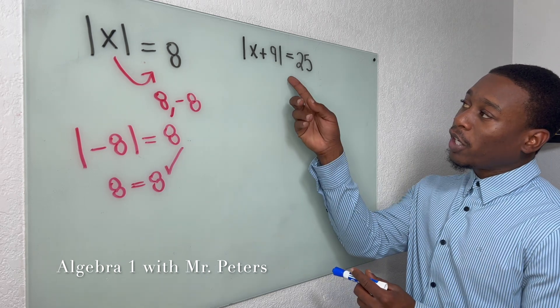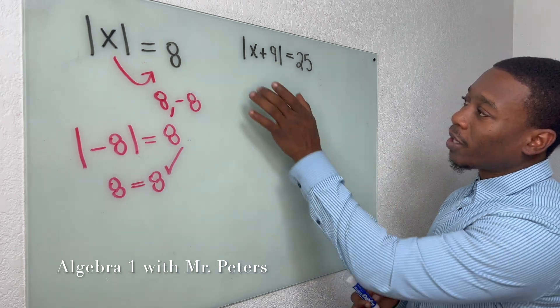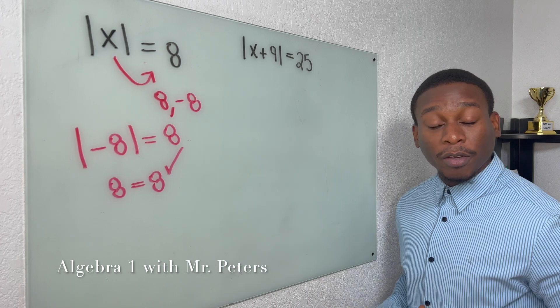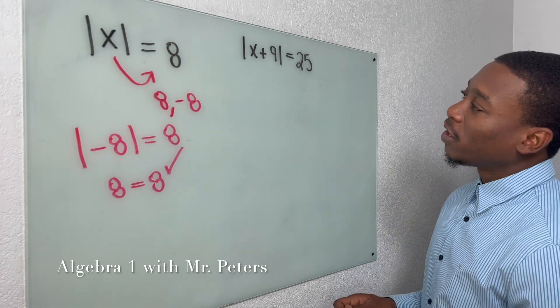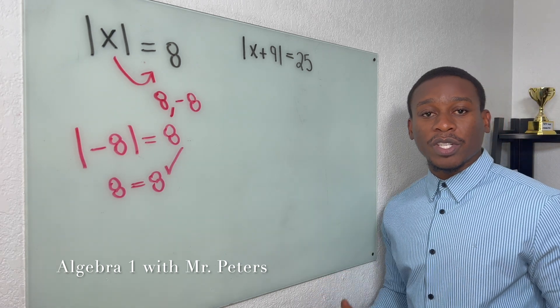Now when we switch over to equations, what we want to make sure is that the absolute value bracket is by itself, which it is. So since it's by itself, this is how we set up the equation to solve.